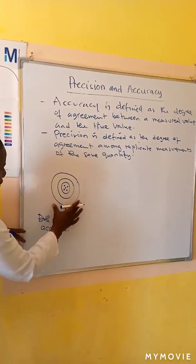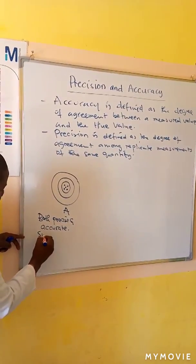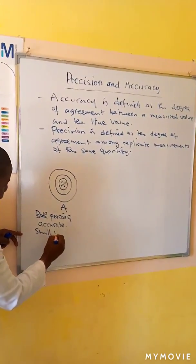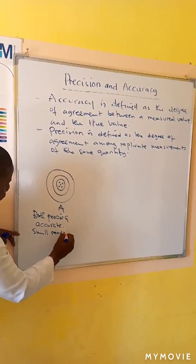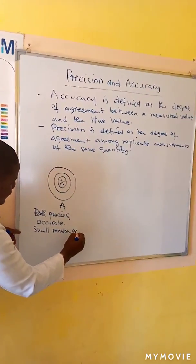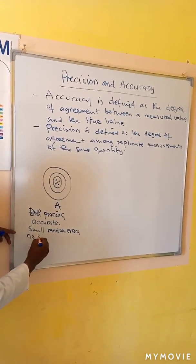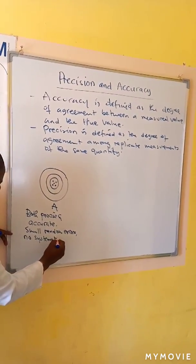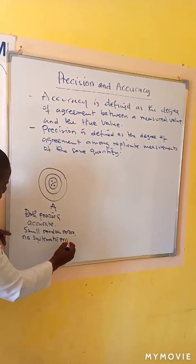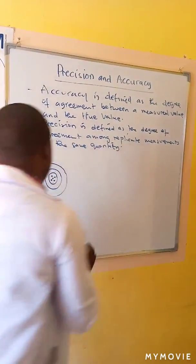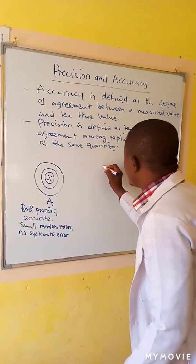In this case it means there are small random errors and no systematic errors. You continue practicing in B.